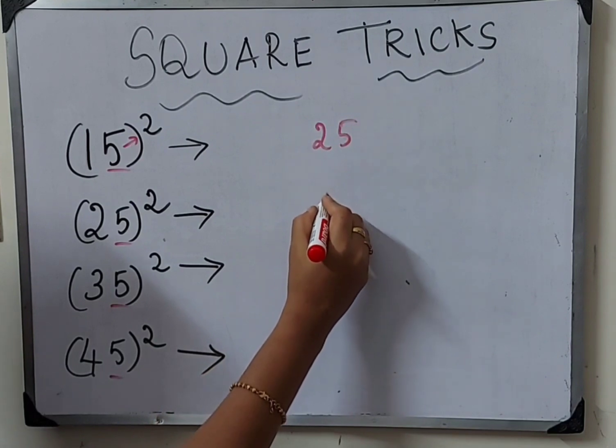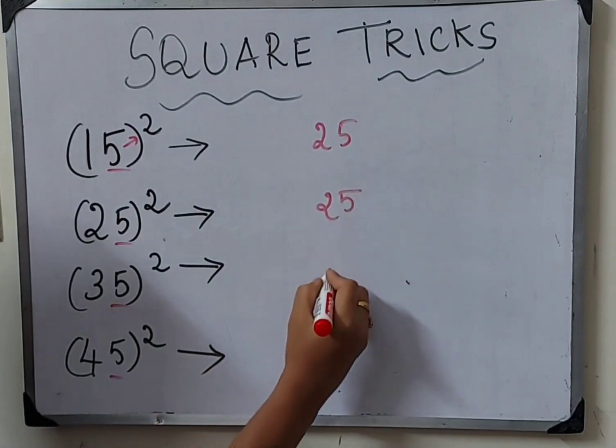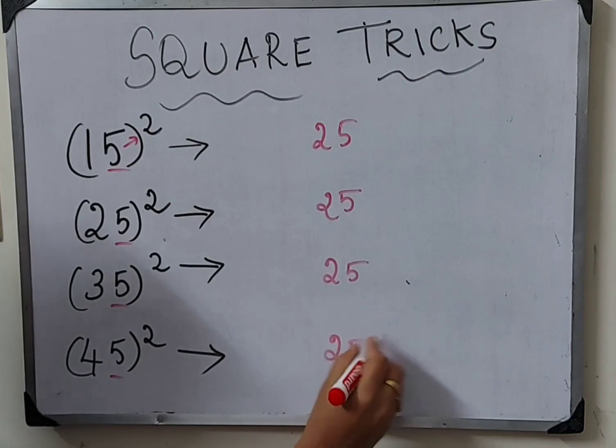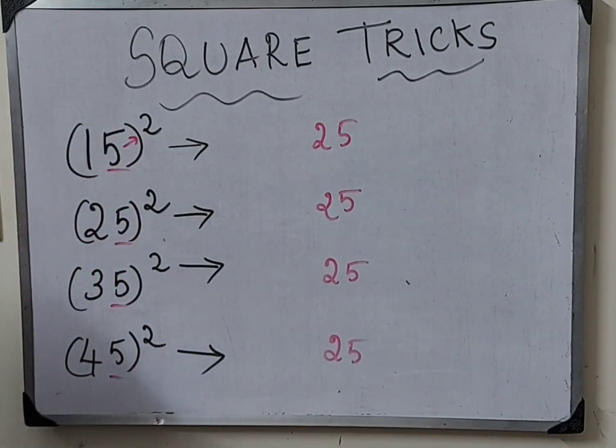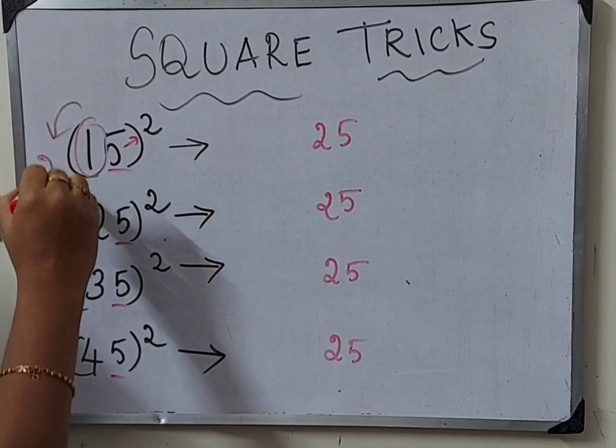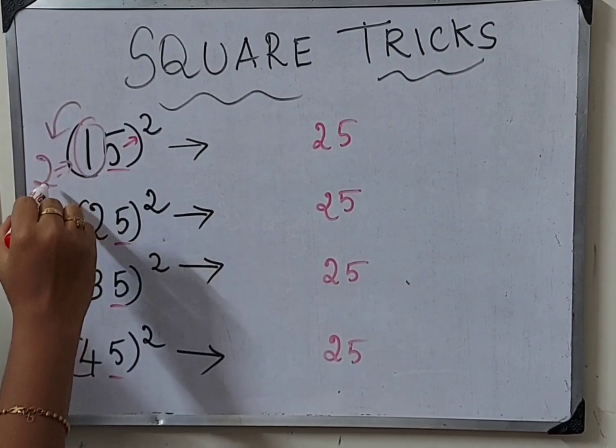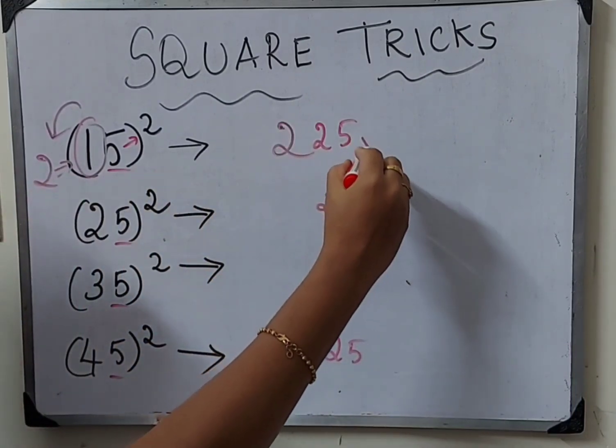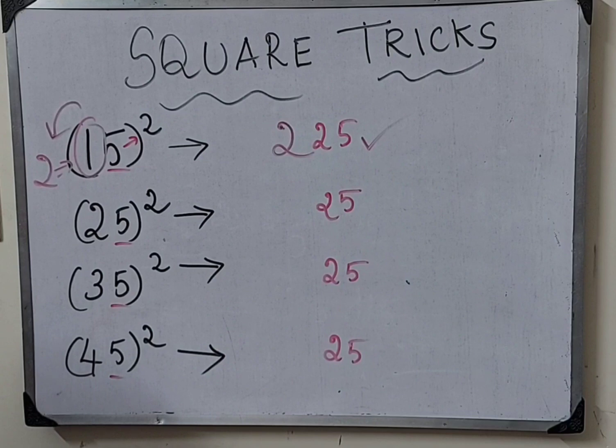5 into 5 is 25. So we find 5 square is 25. So what do we do now? 15 square: we have 1, so 1 times 2 is 2. So answer is 225.